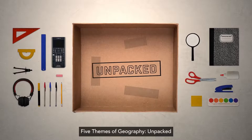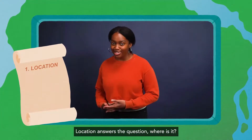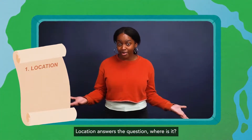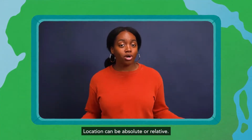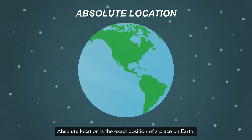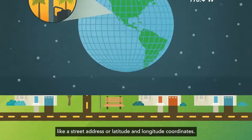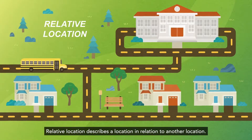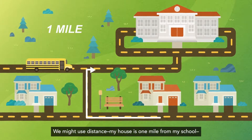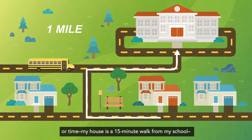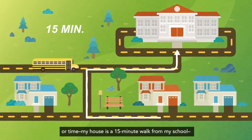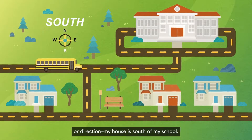Location answers the question: where is it? Location can be absolute or relative. Absolute location is the exact position of a place on earth, like a street address or latitude and longitude coordinates. Relative location describes a location in relation to another location. We might use distance — my house is one mile from my school — or time — my house is a 15-minute walk from my school — or direction — my house is south of my school.